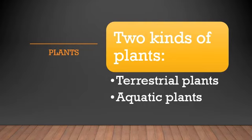Terrestrial plants — let me repeat the spelling: T-E-R-R-E-S-T-R-I-A-L, terrestrial plants. And aquatic — A-Q-U-A-T-I-C, P-L-A-N-T-S, aquatic plants. Terrestrial plants and aquatic plants — these are the two different kinds of plants.